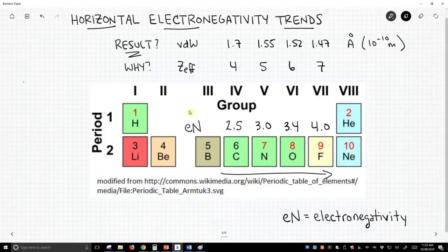In summary, as effective nuclear charge increases from left to right across the periodic table, electronegativity also increases, and the van der Waals radius tends to decrease.